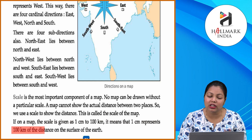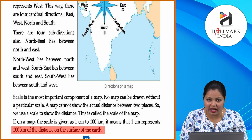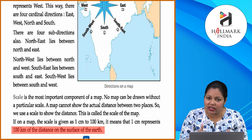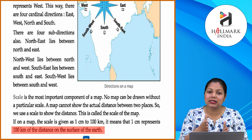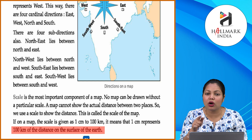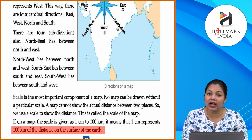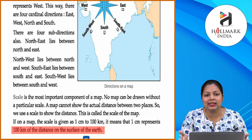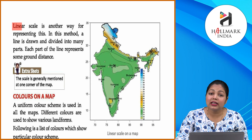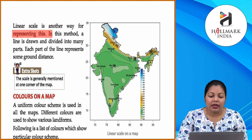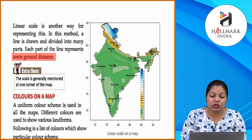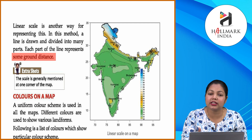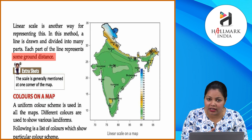Scale is the most important component of a map. No map can be made without scale. Scale jo hota hai wo actual distance show karta hai ek place se doosari place tak. Agar map mein scale dikhaya gaya hai one centimeter is equal to 100 kilometers, toh matlab ek centimeter 100 kilometers ka hai. Linear scale is another way of representing distance — a line is drawn and divided into many parts, each part representing some ground distance.